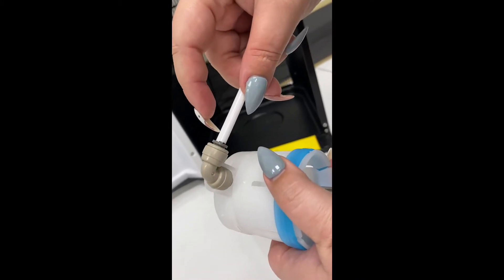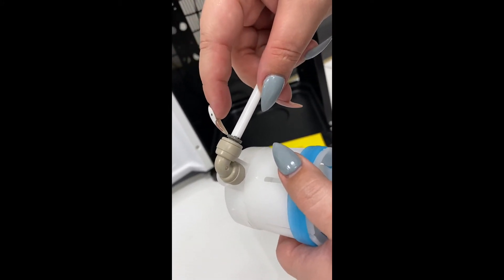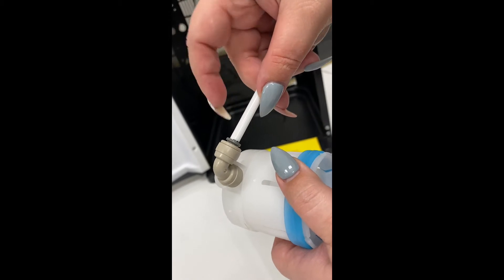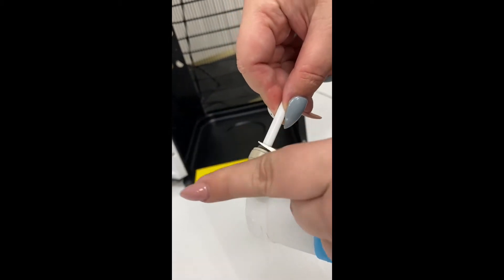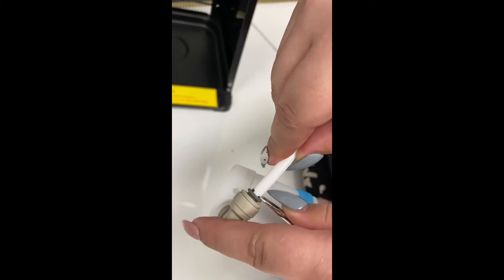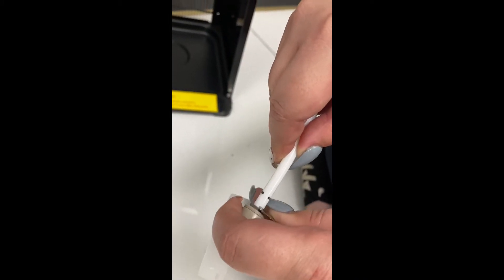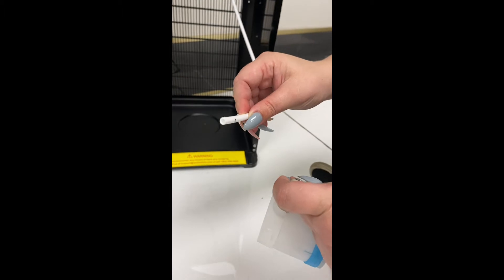To disconnect this push connection, you need to push this little ring in to release the white tubing. I personally like to use a flathead screwdriver to assist me. I'm going to push it in and pull the tubing out so that the tubing is now loose.